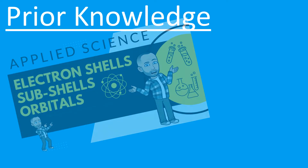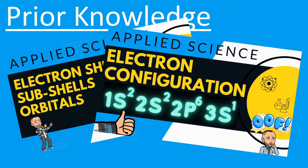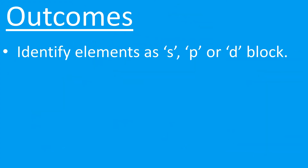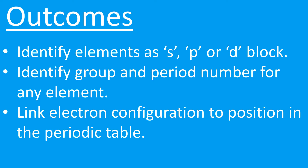You do require some prior knowledge before watching this video, so I suggest you do learning aim A1 first. You must be aware of shells, subshells and orbitals, and also the electron configuration videos. By the end of this video, you're going to be able to identify elements as either s, p, or d block elements, identify the group and period number for any element, and link the electron configuration to the position in the periodic table.